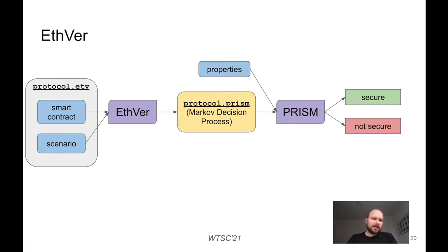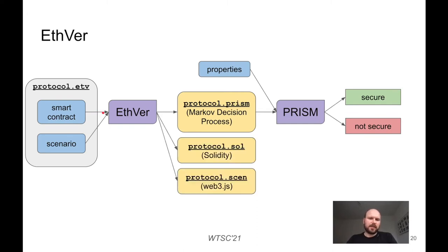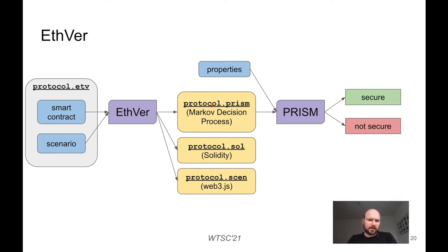The input to Edver is not exactly Ethereum or Solidity code — it's slightly different. Edver actually consists of two compilers: the first compiler outputs the PRISM model, and the second compiler outputs the Solidity file and the Web3 file. The second compiler is straightforward, but the main contribution is the first compiler which creates the PRISM model. The second compiler allows us to simply upload the contract to the Ethereum network.